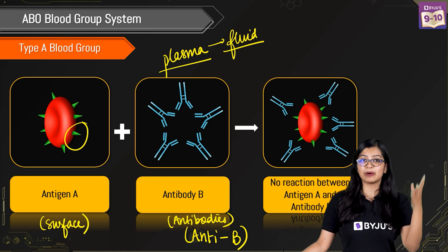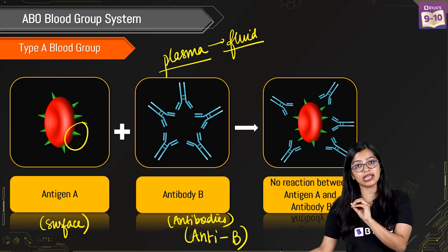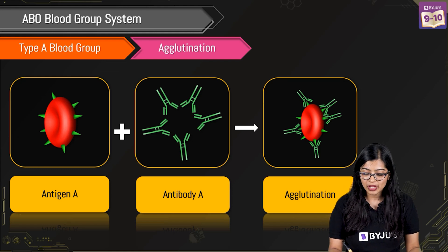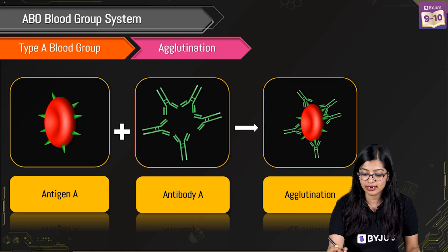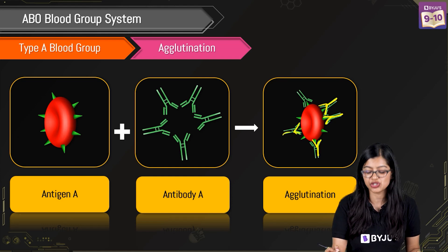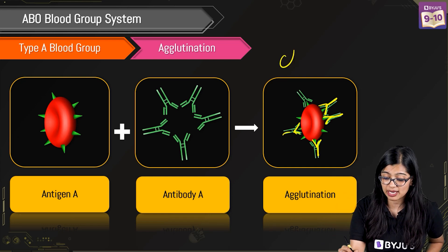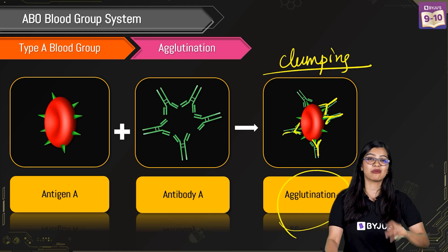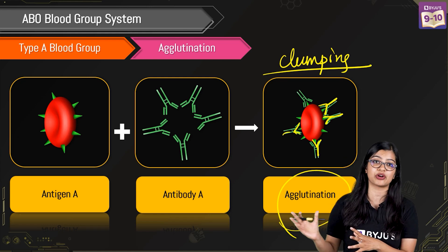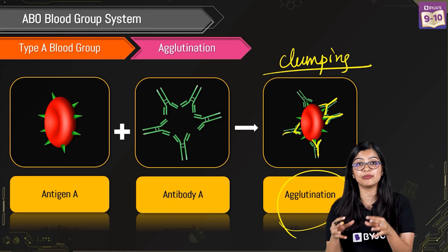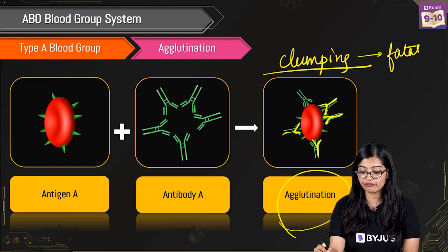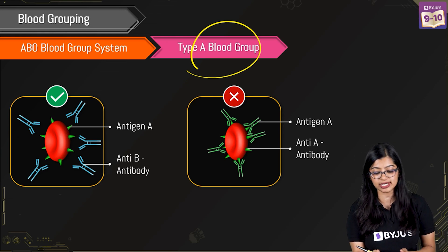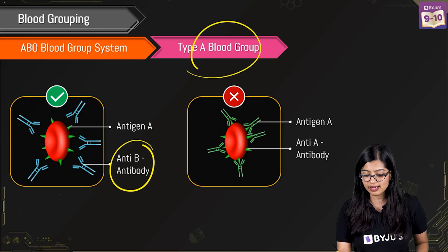But what if a person who has antigen A on the surface of their RBC also had antibody A? Anti-A is highly specific to antigen A, which means if antibody A were present in the blood it would start to clump up around the antigen. This clumping reaction is called agglutination. Antibodies normally get rid of pathogens through agglutination, but if it happens to our own RBCs it could be fatal. That is why a person with blood group A — antigen A on the surface — will have anti-B in their plasma.